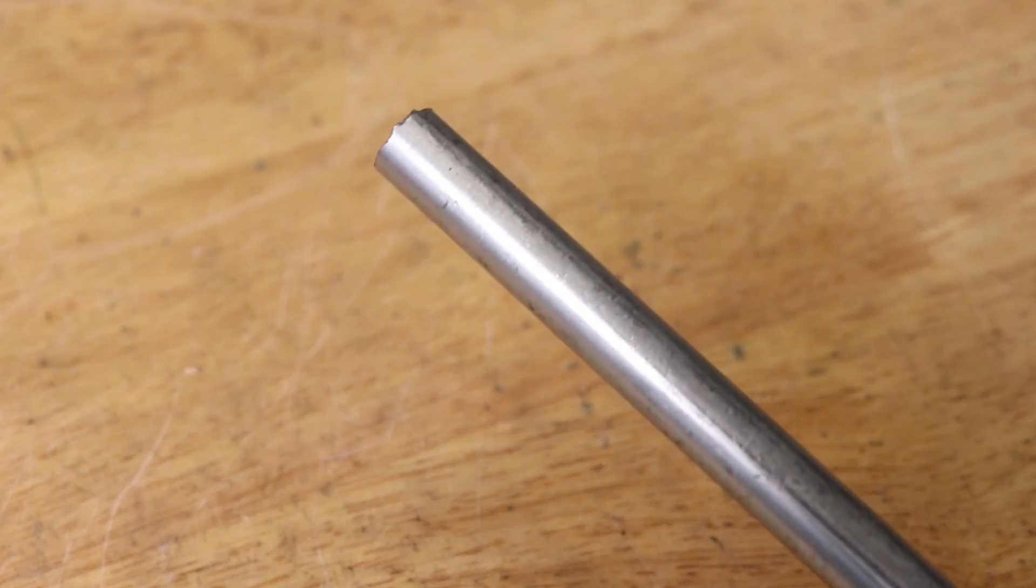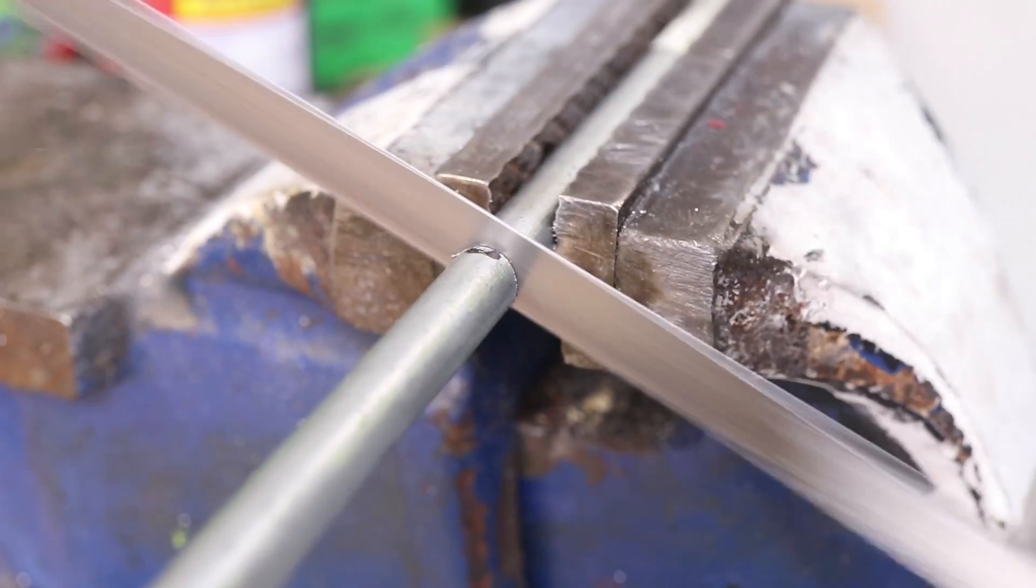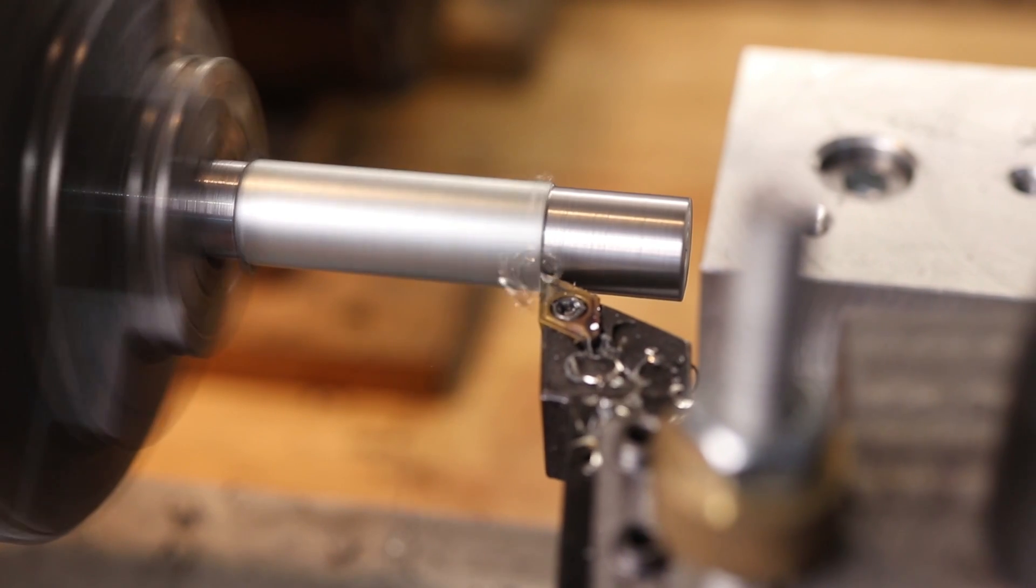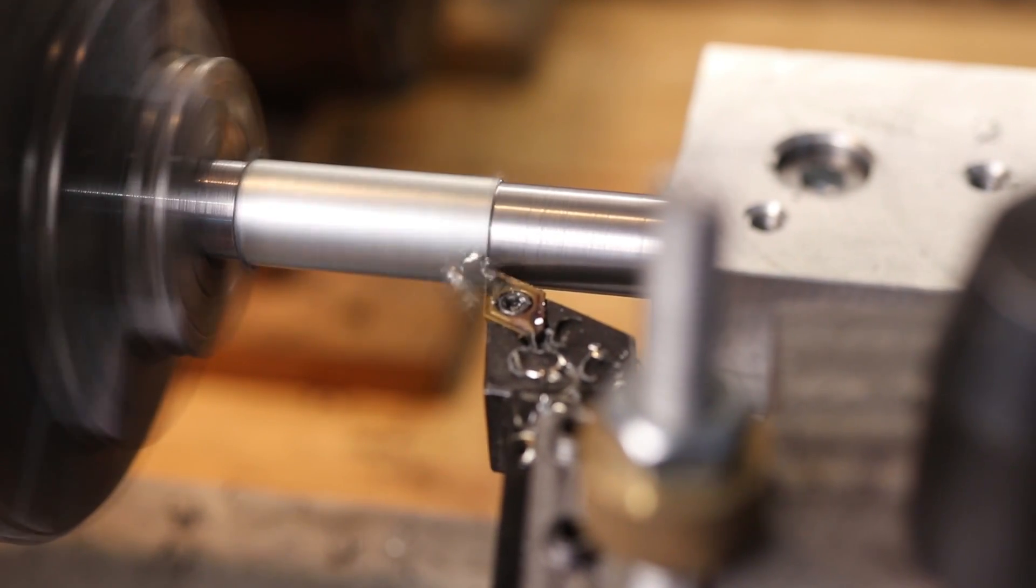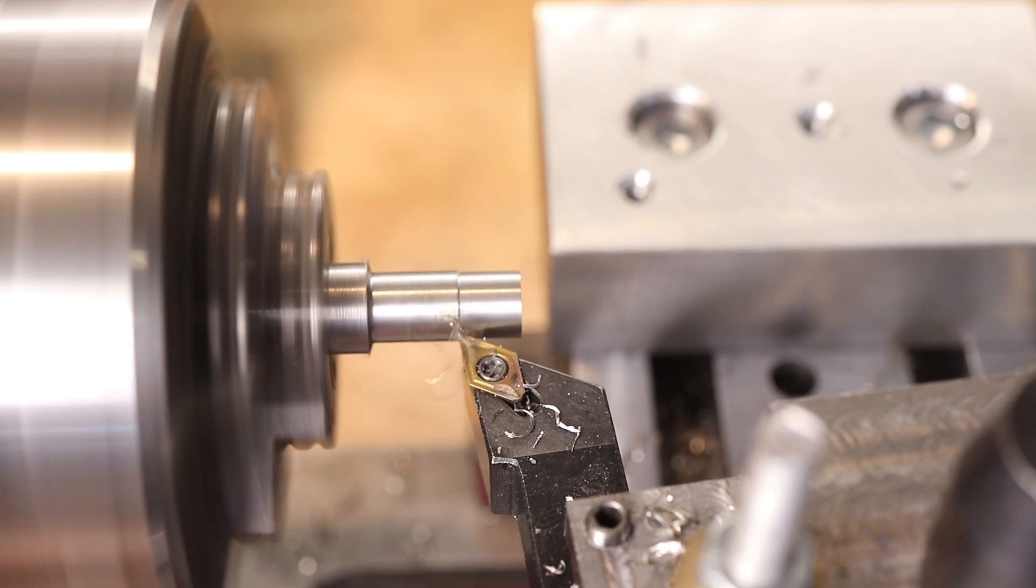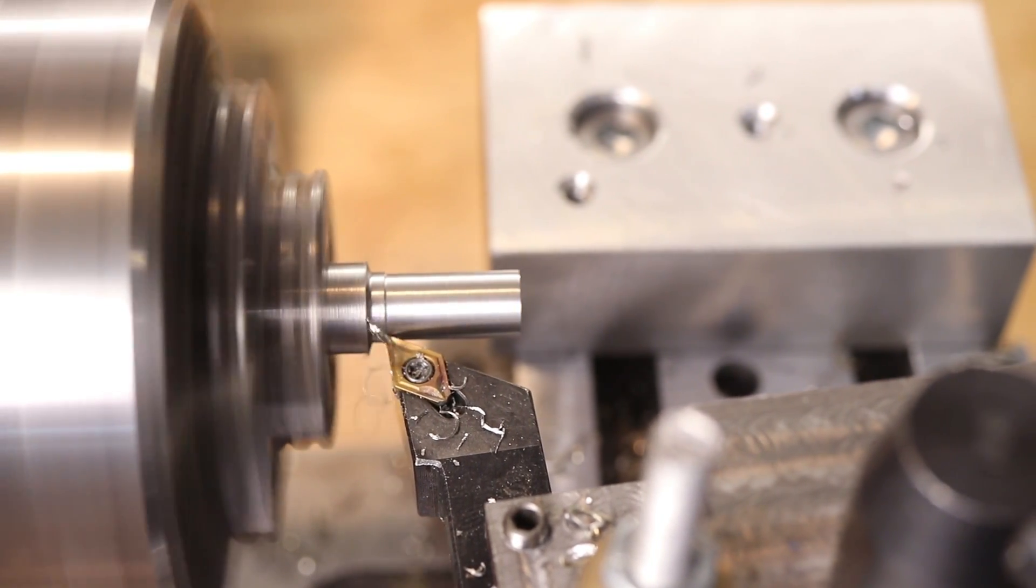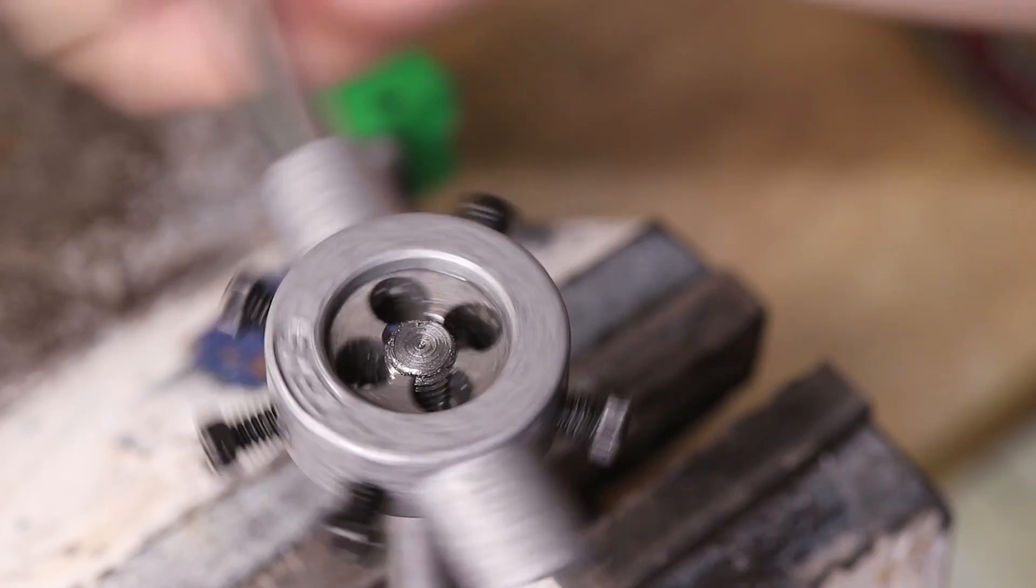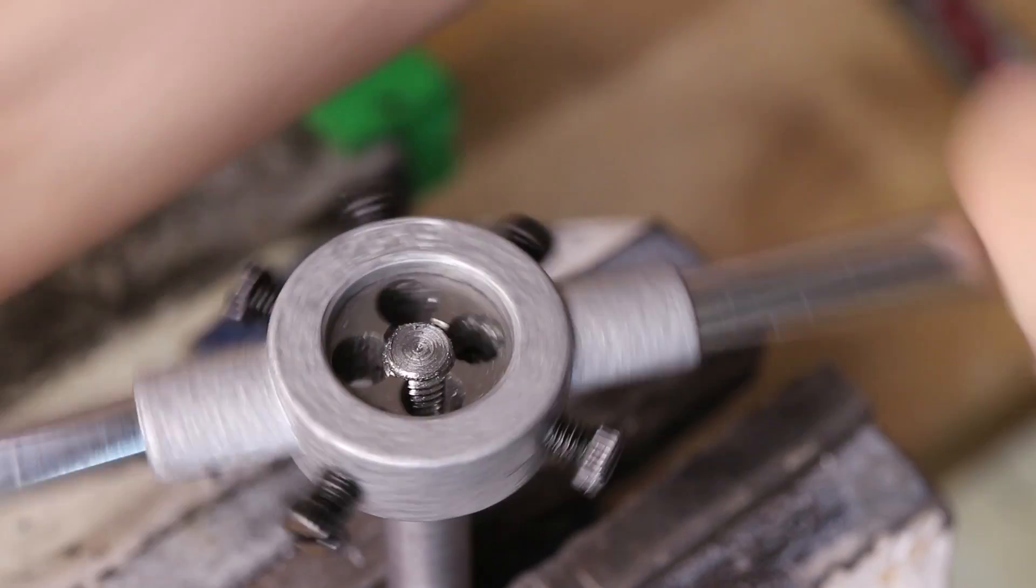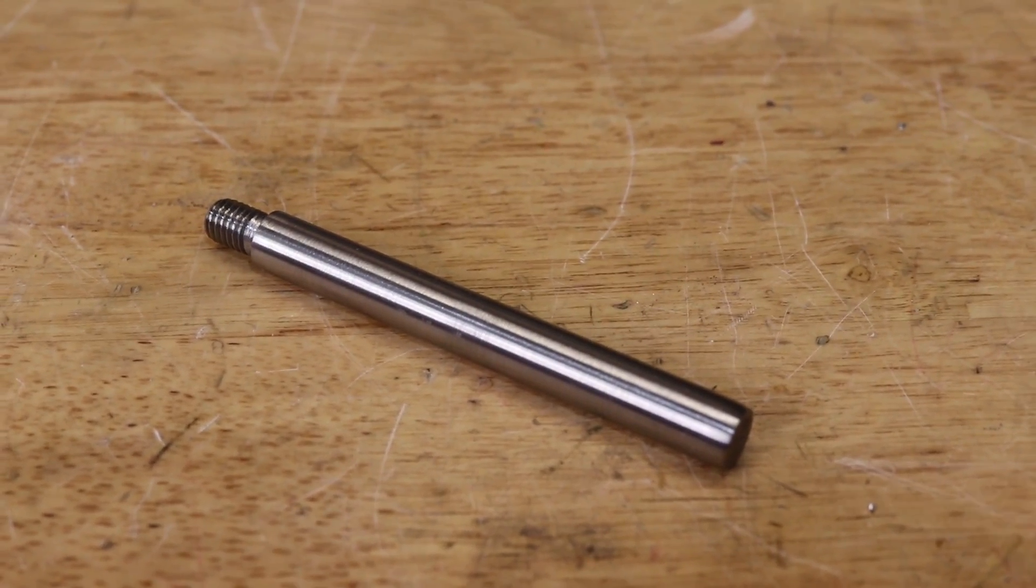I'm going to make the lever from a simple piece of half inch mild steel. It's not perfectly round so I'll take a few light cuts to true it up. I'll then use the die to cut an M8 thread onto the end.